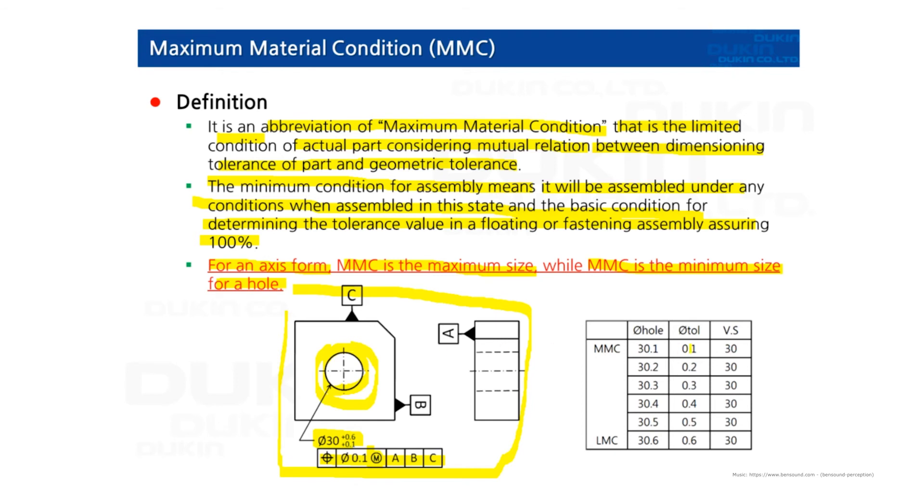So when the feature is manufactured as 30.1 diameter, tolerance of position would be 0.1. Let's look at the next slide.